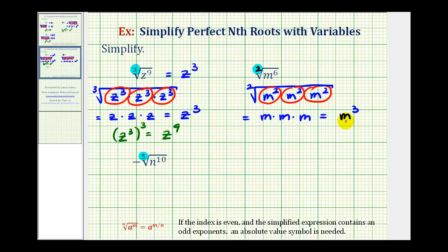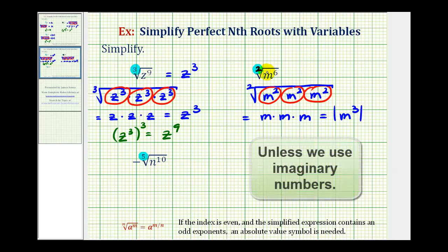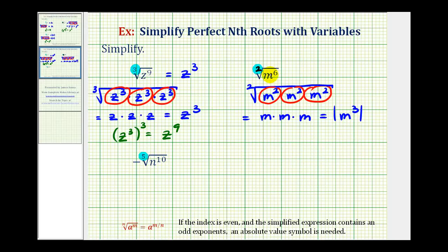Now, unless we're told that m is positive, when the index is even and the simplified expression has an odd exponent — and three is odd — we do need an absolute value around this. The reason is we can only take the square root of a positive number, so the radicand has to be positive, and the principal square root also has to be positive. If m were negative, the radicand would be positive, which is fine, but without the absolute value the result would be negative, which is not possible. So again, if the index is even and the exponent is odd, we need an absolute value, unless we're told the variable is always greater than zero.